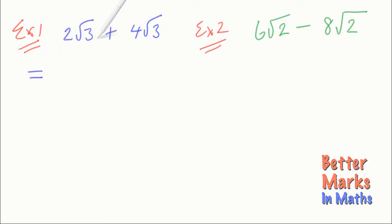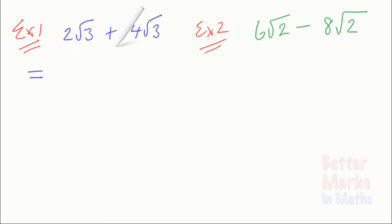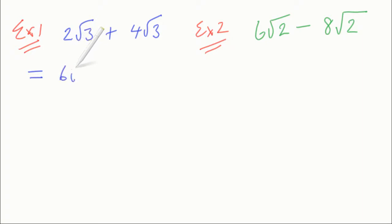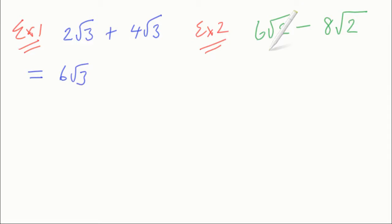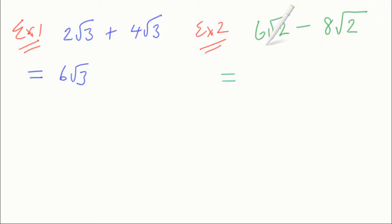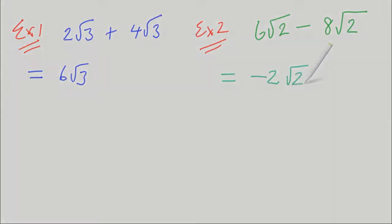You keep the like surd and just add the numbers in front of the surds. So 2 plus 4 is 6, and so 2 root 3 plus 4 root 3 is 6 root 3, and that's the answer. In this next example, 6 root 2 minus 8 root 2 are like surds again because of the root 2 and root 2, so it's really 6 minus 8 is minus 2, giving minus 2 lots of root 2.